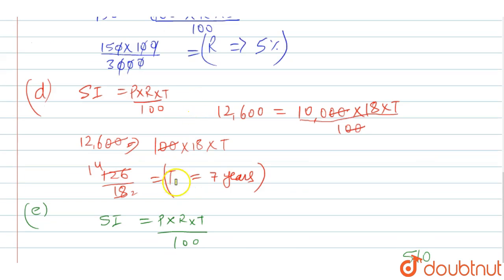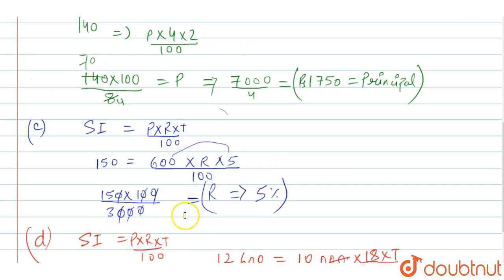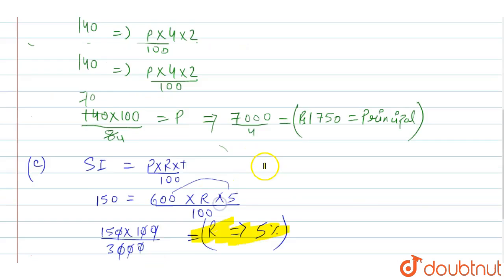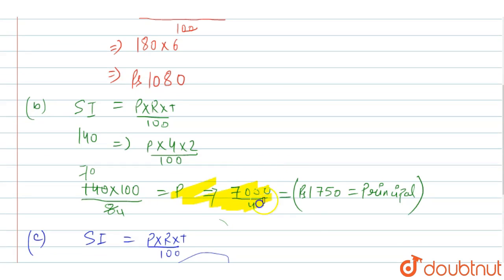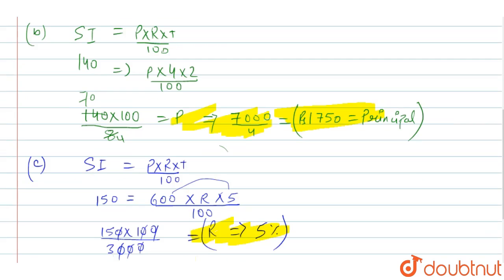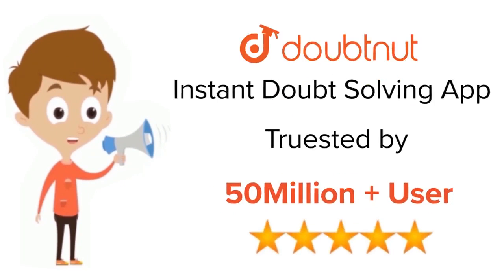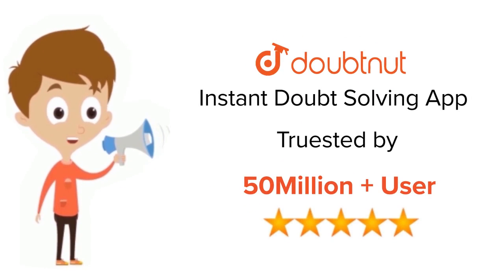To summarize: for sub-part A, with assumed rate 2%, SI is ₹1080; for sub-part B, principal is ₹1750; for sub-part C, rate is 5%; for sub-part D, time is 7 years; and for sub-part E, the sum is ₹12,750. For class 6 to 12, IIT JEE and NEET level, trusted by more than 5 crore students — download the DoubtNet app.